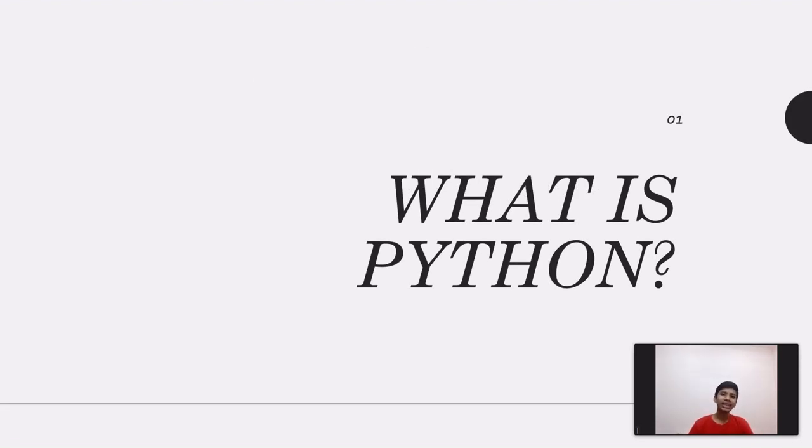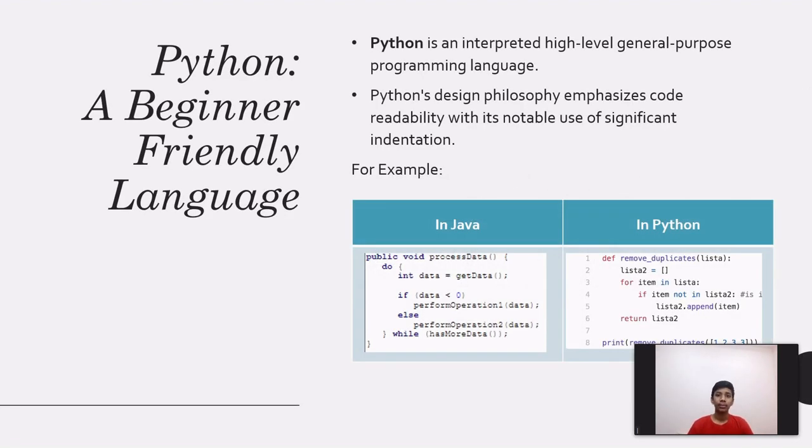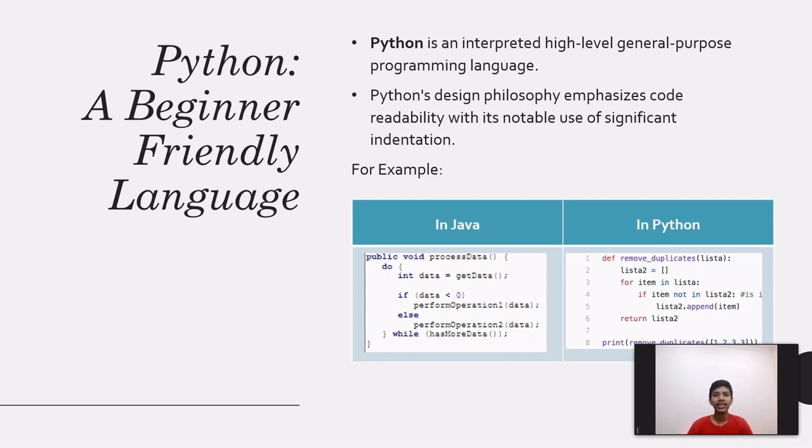What exactly is Python? Python is a high-level, general-purpose, interpreted programming language. Interpreted, what does that mean? The computer cannot understand the code that we write. It understands the machine language, zeros and ones. So, an interpreter basically converts the code that we write into the machine language, line by line.